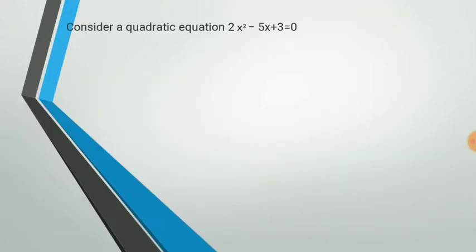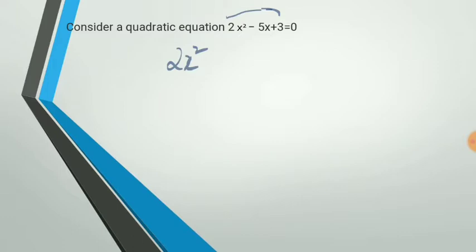Consider the quadratic equation 2x² - 5x + 3. Let us try to solve this. We have 2x² - 5x + 3. Here, 2 into 3 is 6. I need to factorize 6 into two parts such that their sum comes out to be minus 5.